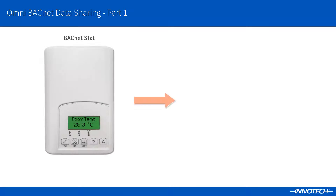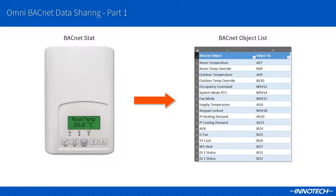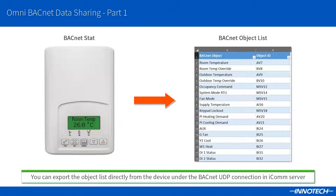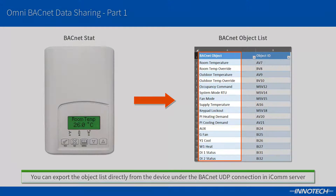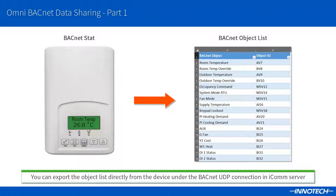It is important to obtain the BACnet object list for the device that you wish to share data with. Once the device can be seen in the ICOM Communication Server BACnet connection, you can export the device object list — we will see this in part 2 of this series. In this example, I have extracted the BACnet object list and have a portion of the resulting CSV file. From this I can see the object name and its associated object ID. Note that some devices may not provide the full object names and this is entirely dependent on the manufacturer; in that case you would need to contact the provider for more information.